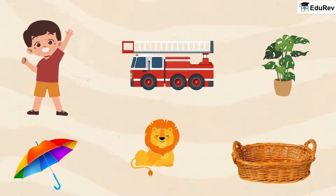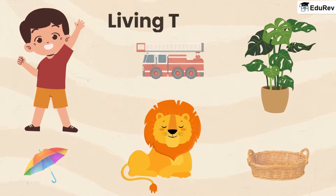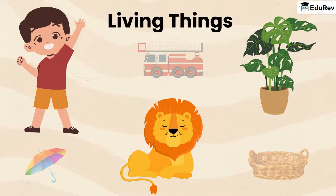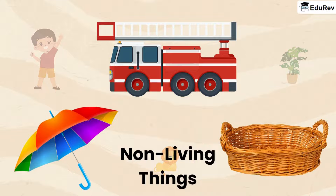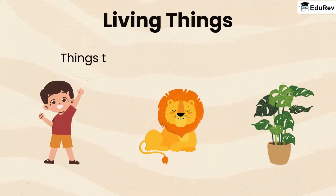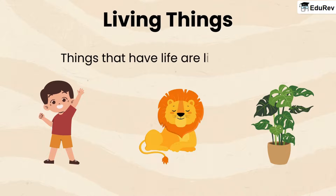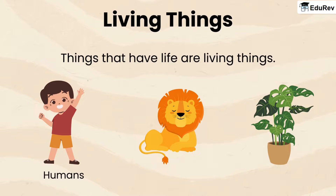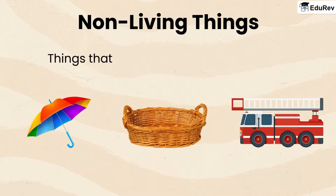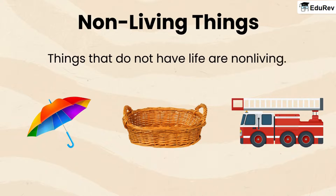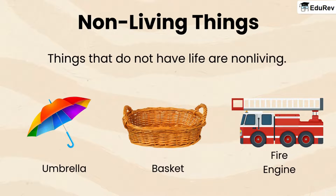We see many things around us. Some are living things, while some are non-living things. Things that have life are living, like human beings, animals and plants. Things that do not have life are non-living, like umbrella, basket, fire engine and many more.